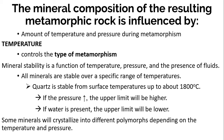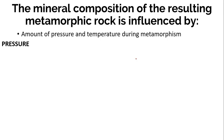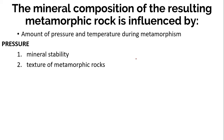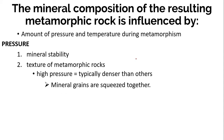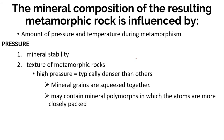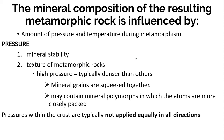Some minerals crystallize into different polymorphs depending on temperature and pressure — polymorphs have the same composition but different crystalline structures. Quartz is a good example, with slightly different forms stable between 0 and 1800 degrees Celsius. Pressure is also important in metamorphic processes for two reasons: it has implications for mineral stability, and for the texture of metamorphic rocks. Rocks subjected to very high confining pressures are typically denser because mineral grains are squeezed together and may contain polymorphs with more closely packed atoms.